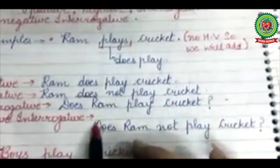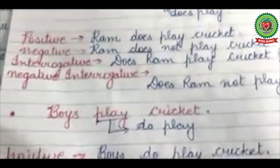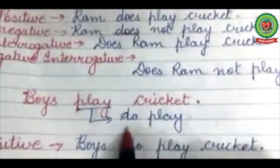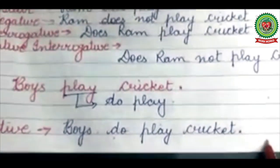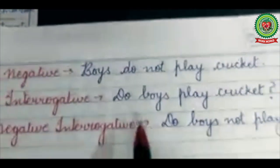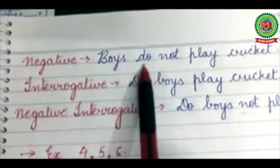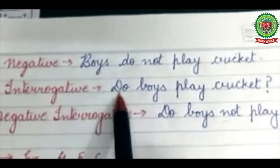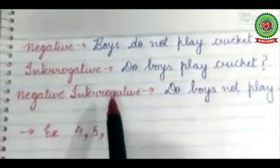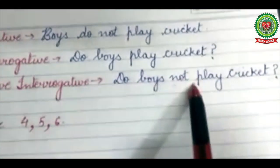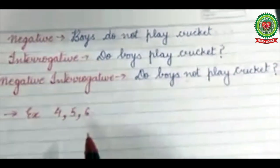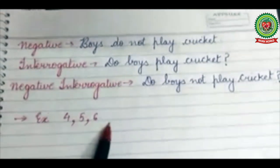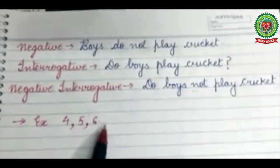Taking the example of a plural subject: Boys play cricket. Here 'play' has no S, so the helping verb will be 'do'. Positive: Boys do play cricket. Negative: Boys do not play cricket. The 'not' remains in place and the helping verb comes to the beginning for the interrogative form.